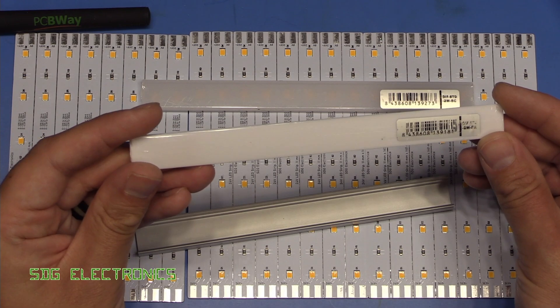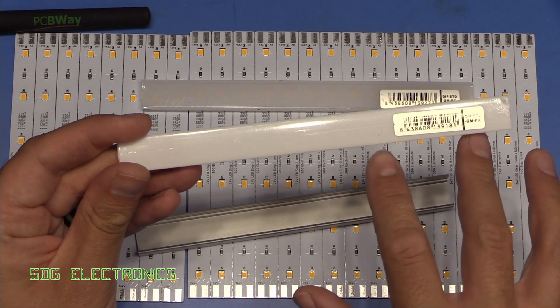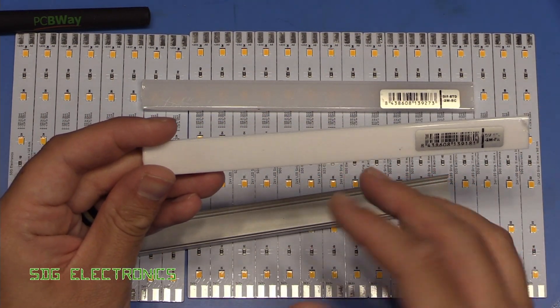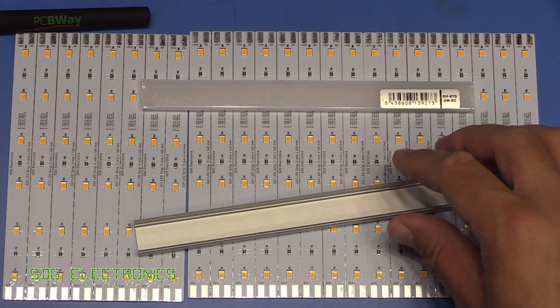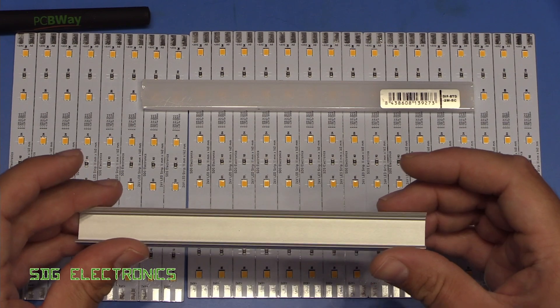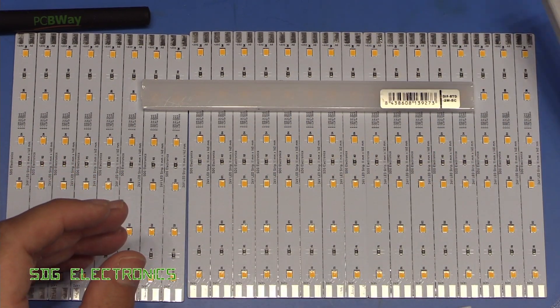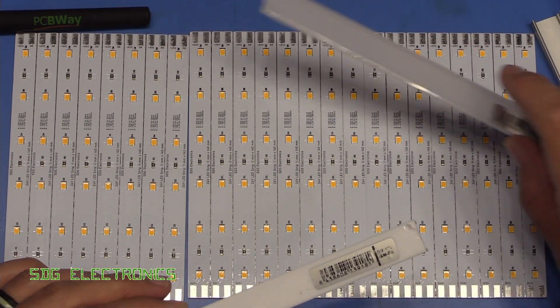Now obviously this one being more opaque will diffuse the light a lot better. The downside being we lose quite a lot of light through this diffuser. So let's quickly try putting an LED strip into this little bit of channel here and see what the two diffusers look like.